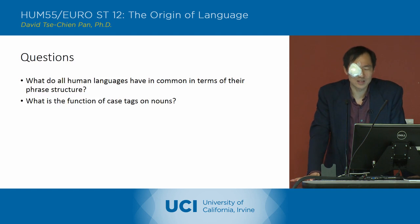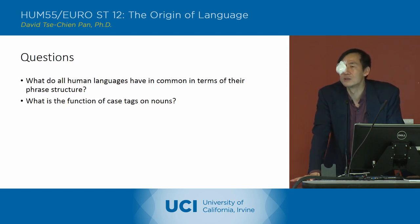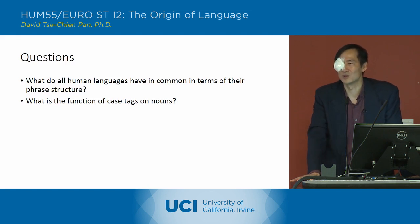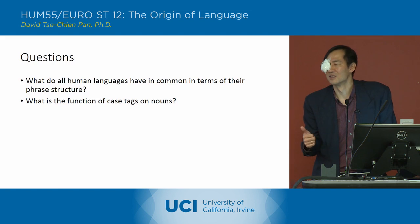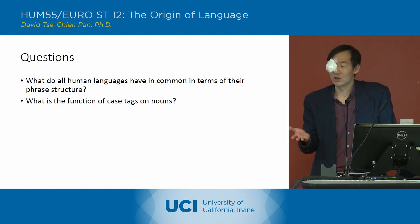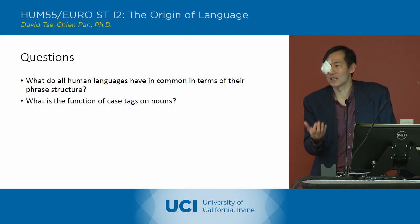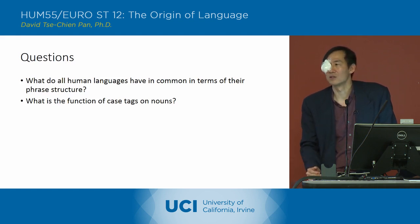So what do all human languages have in terms of their phrase structure? These are some of the details I went into. Does anyone remember any of the details? So each phrase has a head. What else?